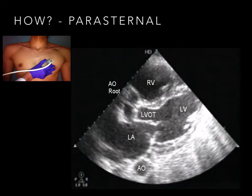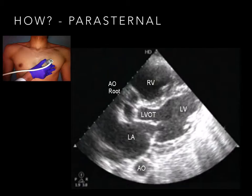Controversy surrounds probe marker placement in the parasternal views. Ultimately, probe orientation impacts only image acquisition and not interpretation. For the parasternal view, place the probe in the fourth intercostal space, just left of the sternum, with probe marker pointed to the patient's left hip. The probe marker may also be pointed to the patient's right shoulder, and all that will change is that the image will be rotated 180 degrees.